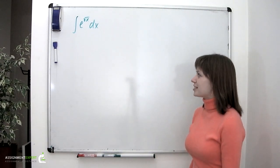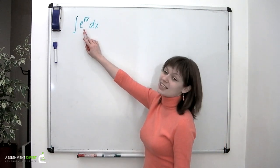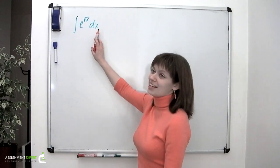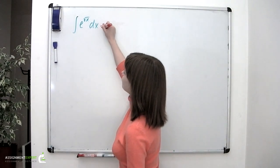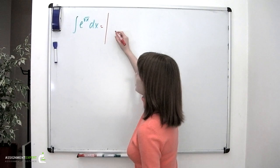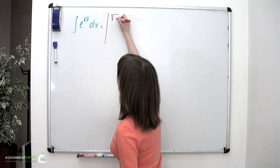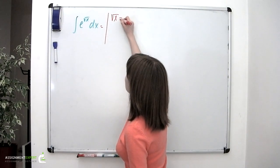In this task we are evaluating the integral of e taken to the power of square root of x dx. Let's make a substitution and denote square root of x as t.